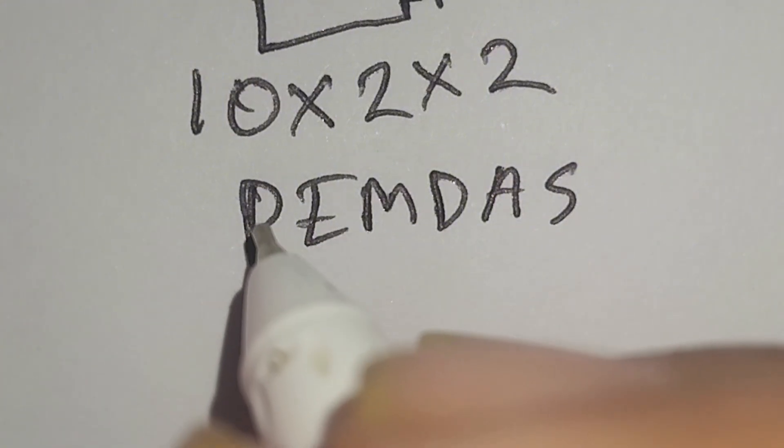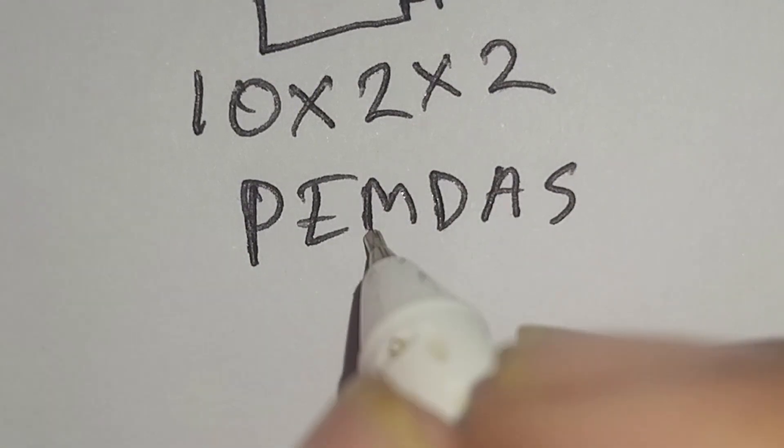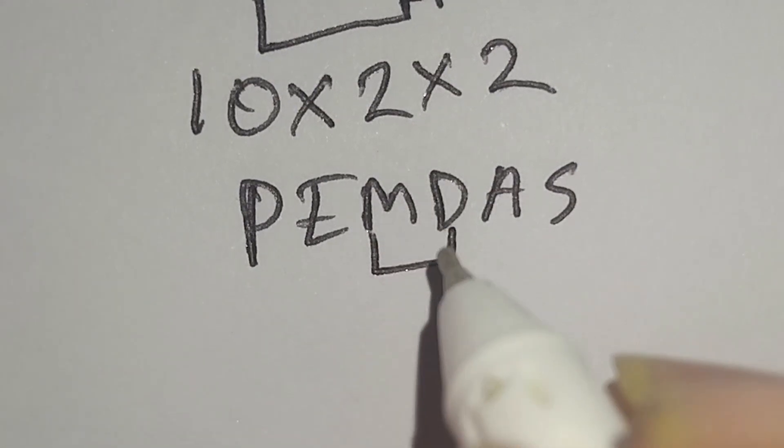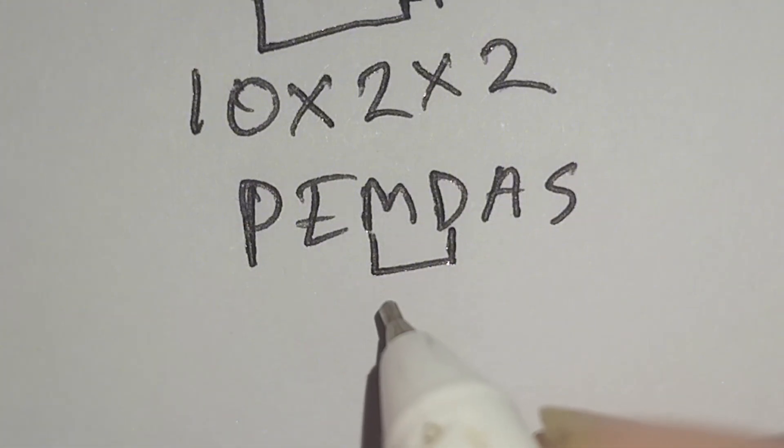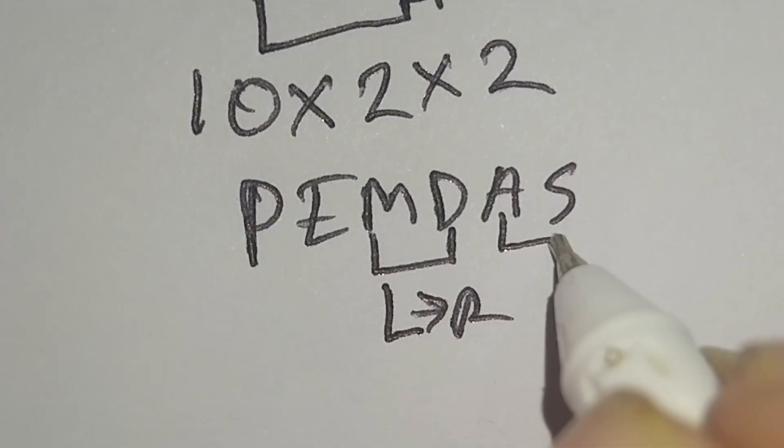According to PEMDAS rule, at first we have to work with parenthesis, then exponent, then multiplication or division, then addition or subtraction. Remember, multiplication and division have the same priority, for this we have to work left to right.